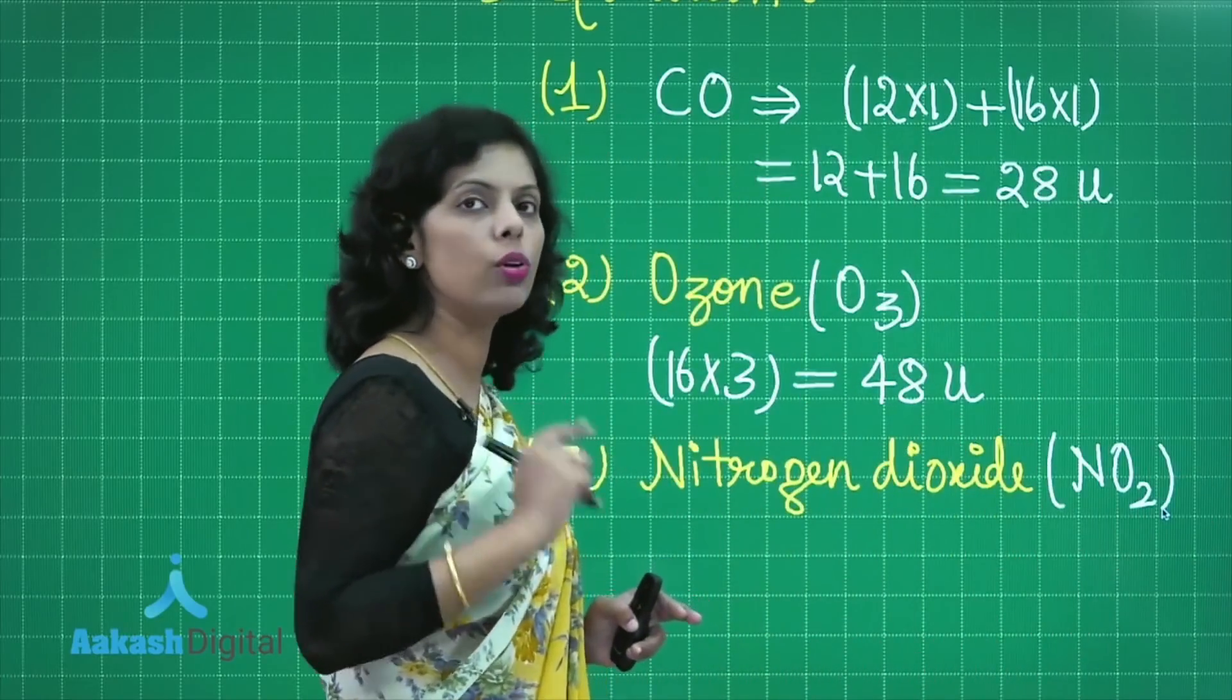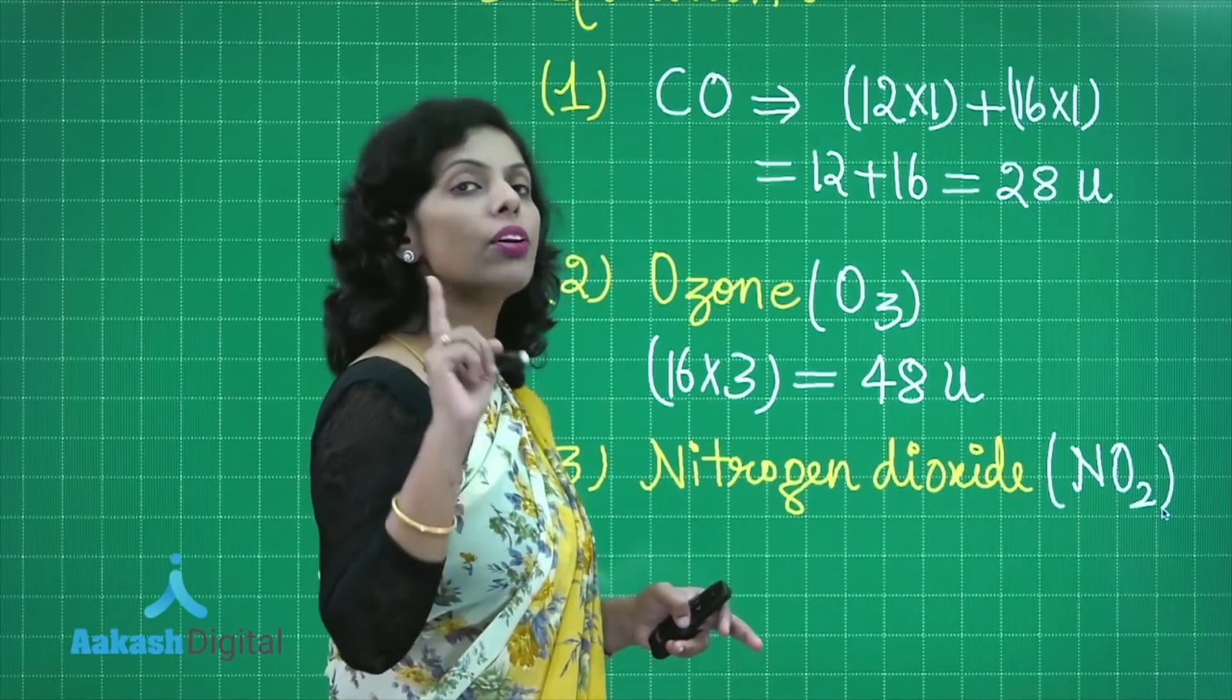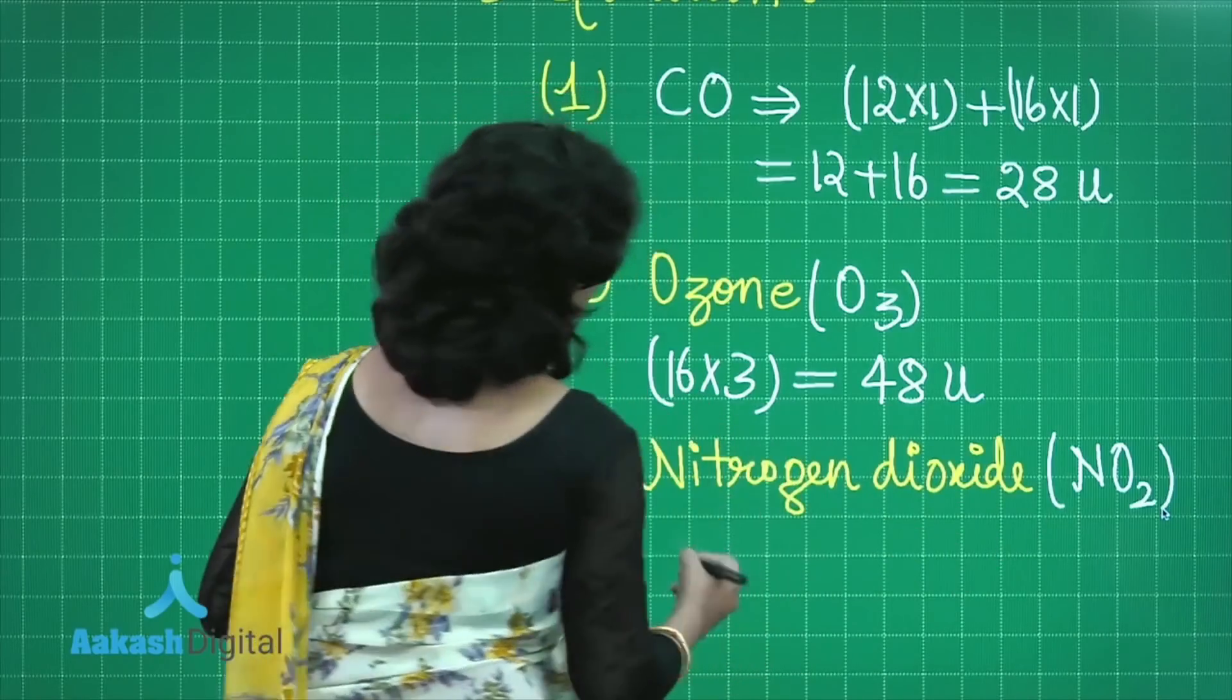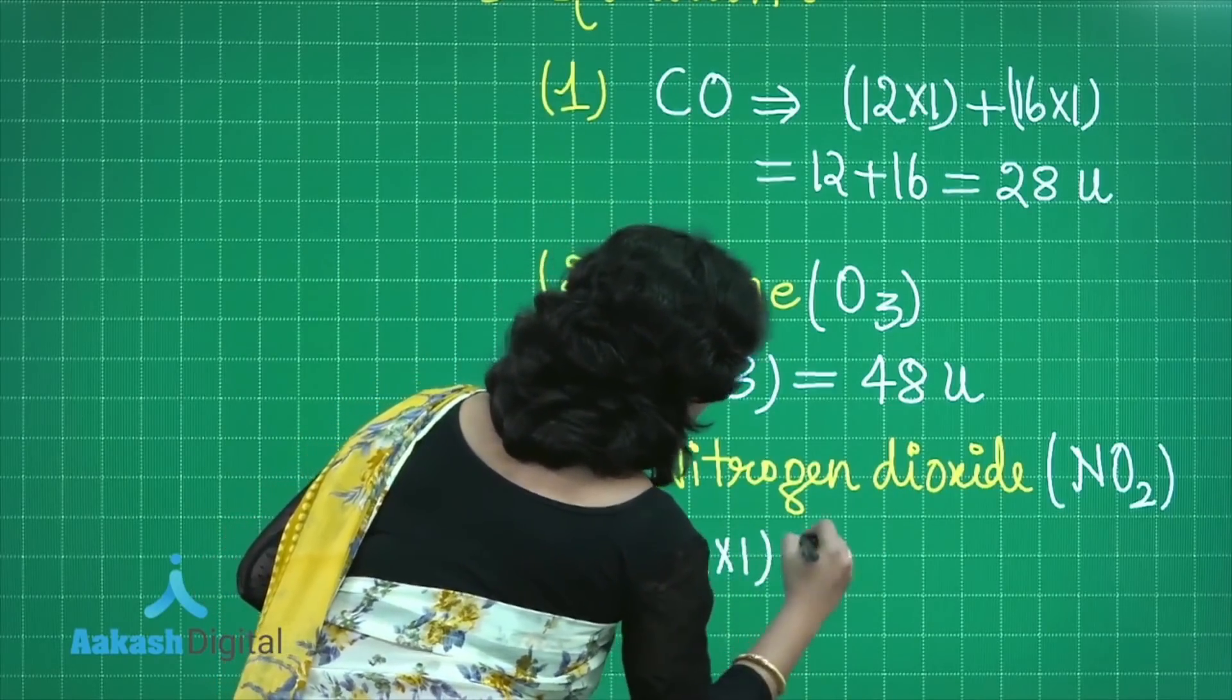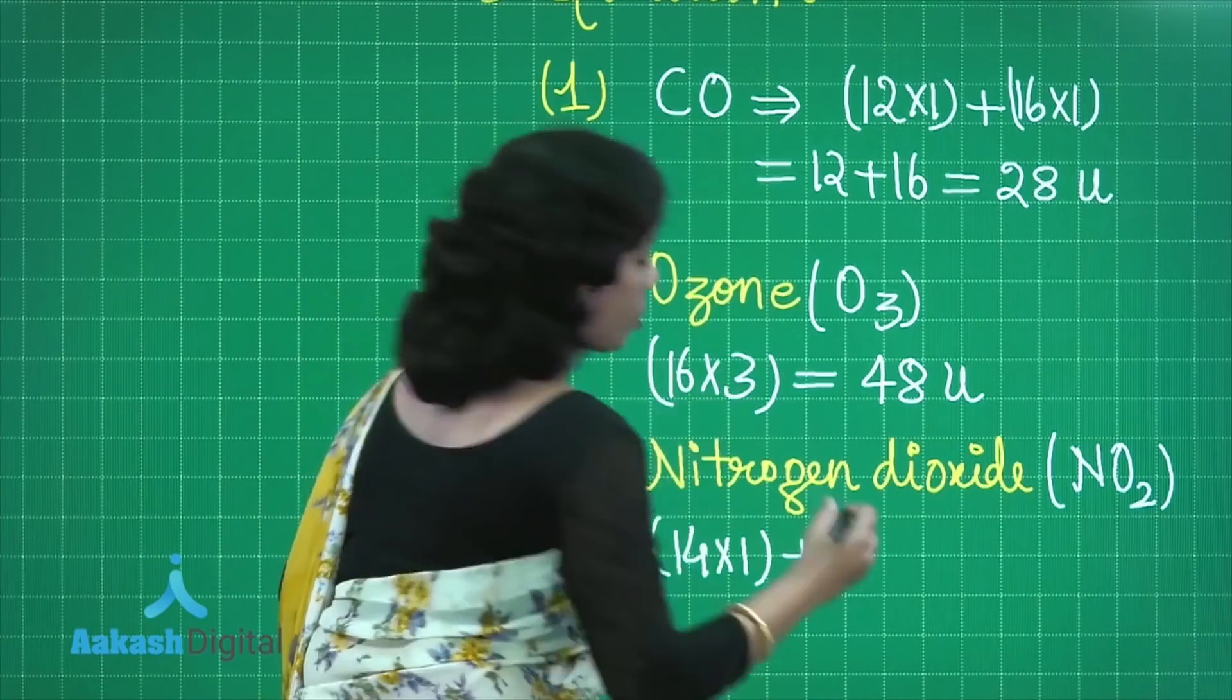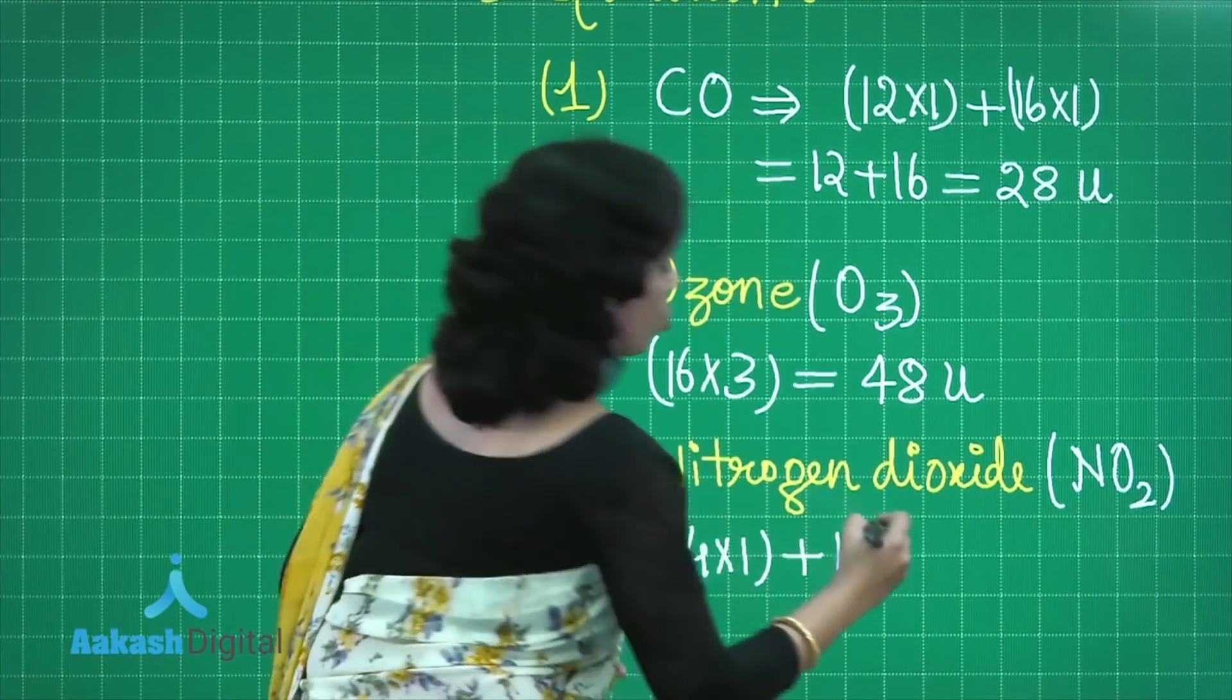Because it is dioxide: NO2. What about the atomic mass of nitrogen? That is 14u. So I'm writing here the atomic mass of nitrogen, that is 14u, one atom is present. Plus oxygen, atomic mass is 16u. How many atoms are there? Two, so I'll multiply two.